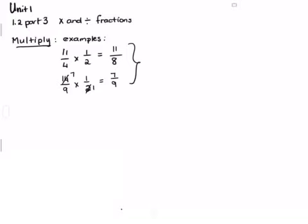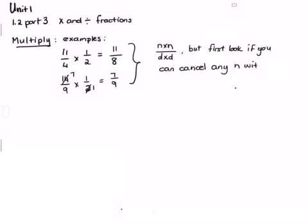So basically, if you have to times fractions, you do numerator times numerator over denominator times denominator. But first, look if you can cancel any top with any bottom. Remember, this only works with numbers. Once we get to algebra and there are separate terms, we're going to change the rule slightly. But this is your basic rule.